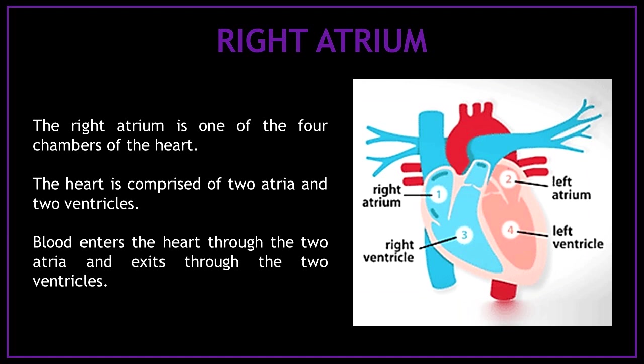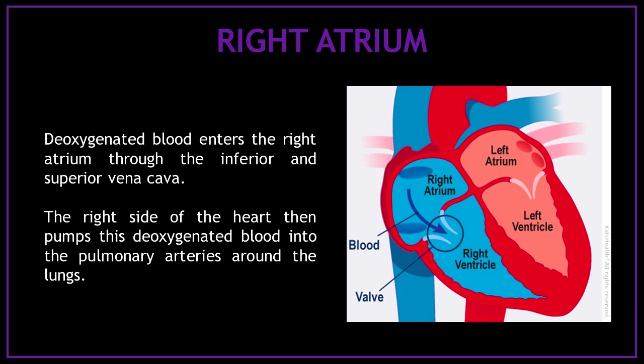The right atrium is one of the four chambers of the heart. The heart is comprised of two atriums and two ventricles. Blood enters the heart through the two atriums and exits through the two ventricles. Deoxygenated blood enters the right atrium through the inferior and superior vena cava, and the right side of the heart pumps this deoxygenated blood into the pulmonary arteries around the lungs.